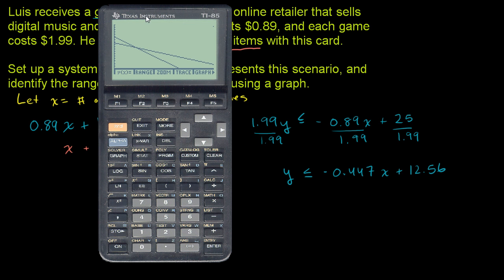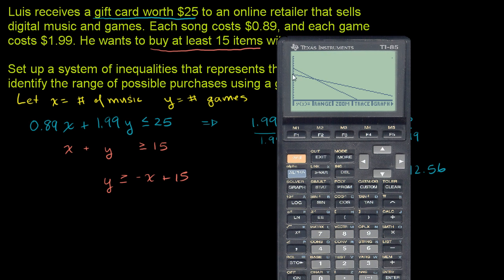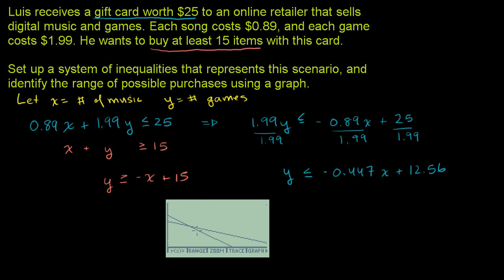There you go. So we're in the positive quadrant. This top line, the orange graph, is y ≥ -x + 15. It has a higher y-intercept than the other one. This is that line right there. You can see it has a slope of negative 1. And we want to be greater than or equal to that line, so we want all the values above that line, including that line.